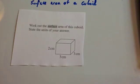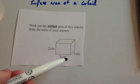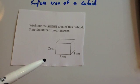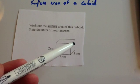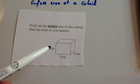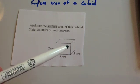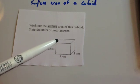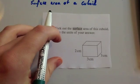Let's have a look at another cuboid and work out the surface area of it. This time we've got the height is two centimetres, the width is three centimetres and the depth is three centimetres. So we've got rectangles on the front, back, left and right, and the top and bottom will each be a three by three square. Let's work out the surface area.